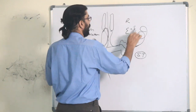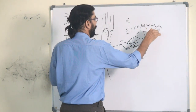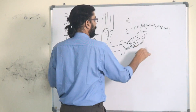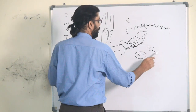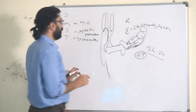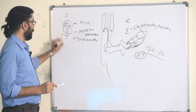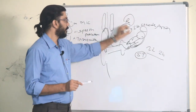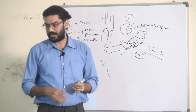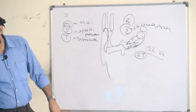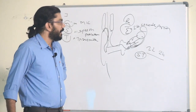The electrode array contains around 22 to 24 electrodes. The details are not typically asked in examinations — just remember the mnemonic M-S-T-R-E for the components. This covers the basics of cochlear implantation.